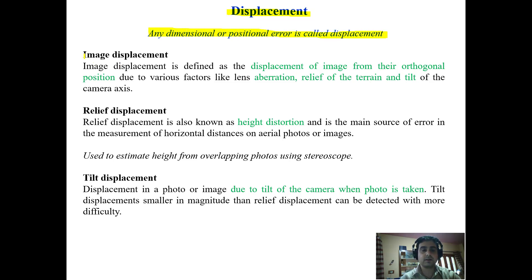Displacement has three types. The first one is image displacement. It is defined as the displacement of an image from the orthogonal position, meaning the vertical position. This may be due to lens aberration, relief of the terrain, or tilt of the camera axis.